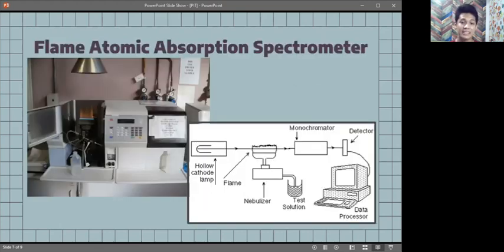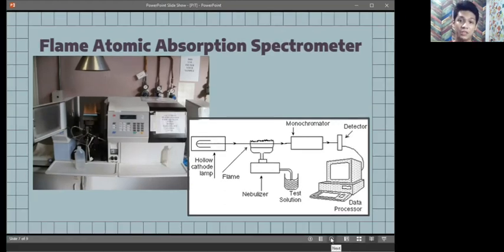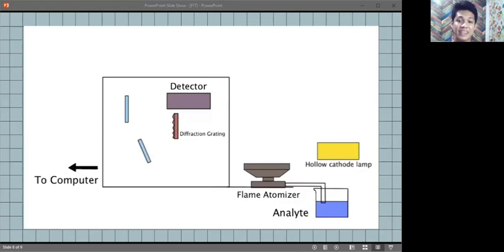In this slide, we can see the actual Flame Atomic Absorption Spectrometer. So how does the machine work? The analyte is taken into the nebulizer where it is vaporized and conditioned to provide the best sample for the flame. The radiation sends light through the flame and into the monochromator.